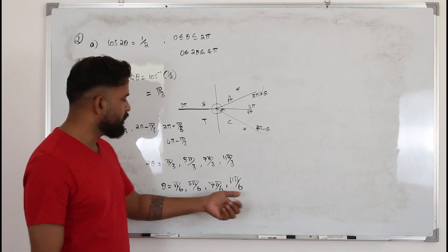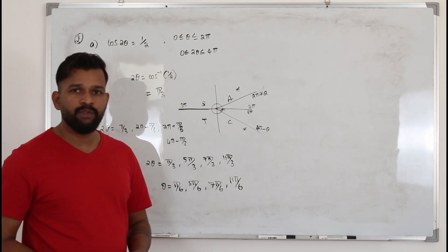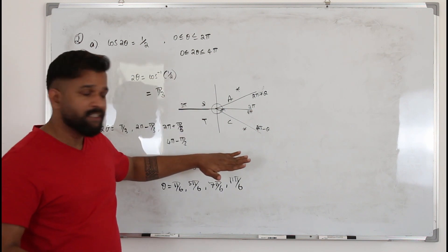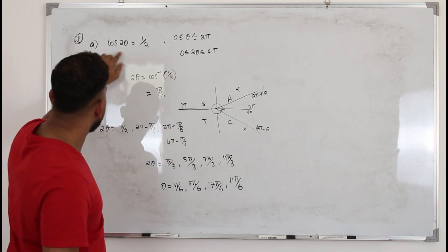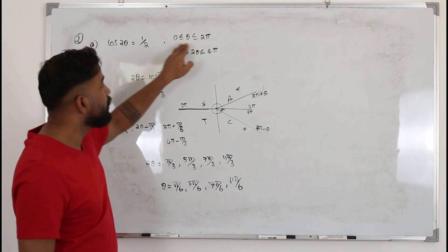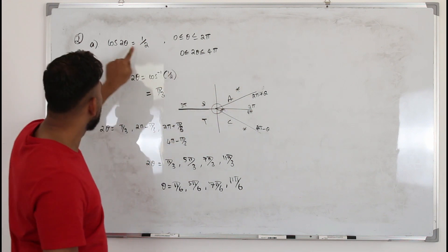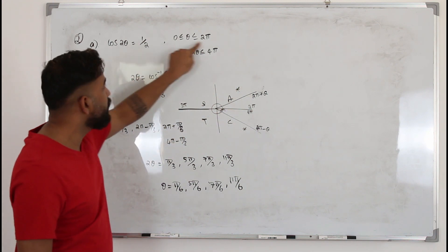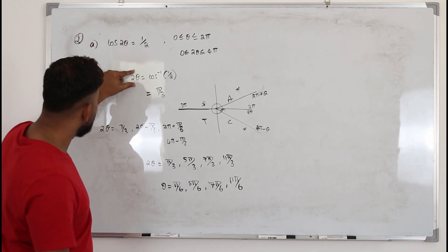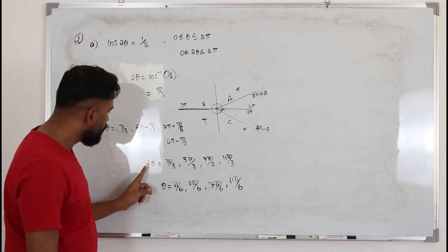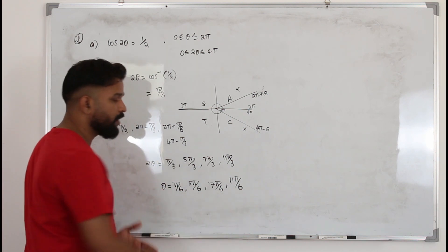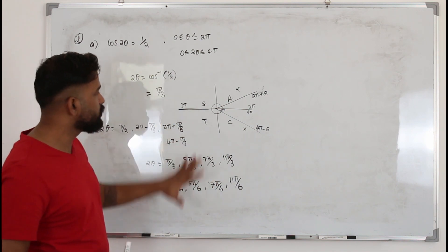Write each answer as a simplified fraction — that's your solution. So the method is the same as solving a simple trigonometric equation. At the beginning, if the coefficient is 2, multiply the limits by 2; if it's 3, multiply by 3; if it's divided by 2, divide by 2. Then at the end, divide everything by that number. That's the one extra step.